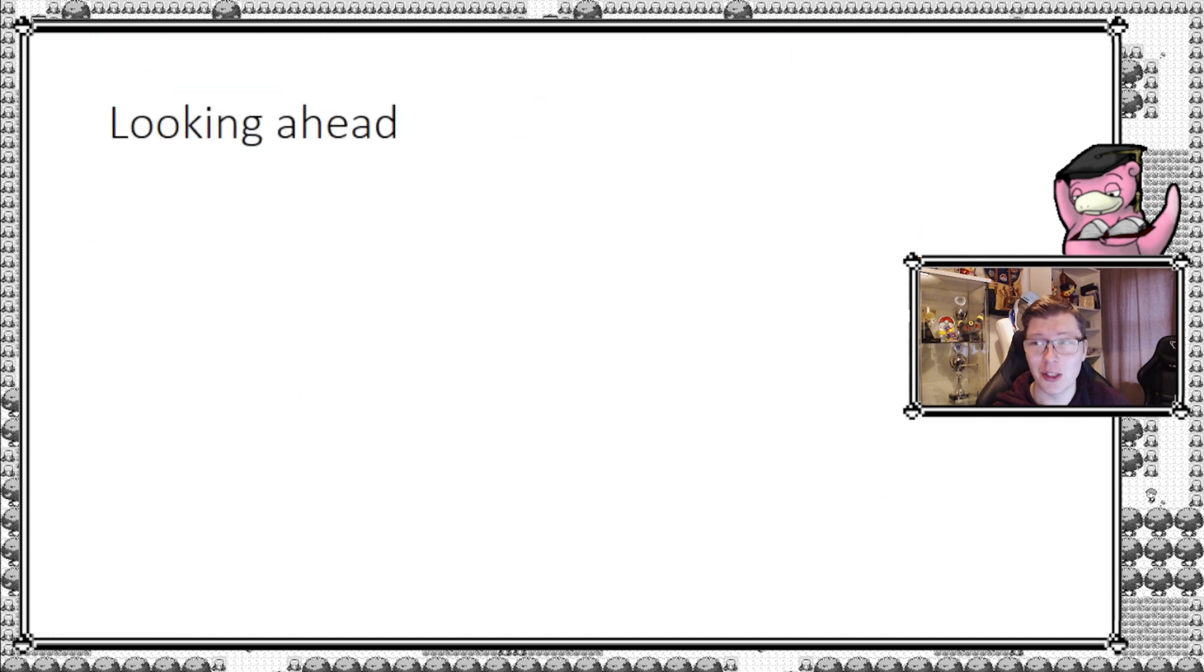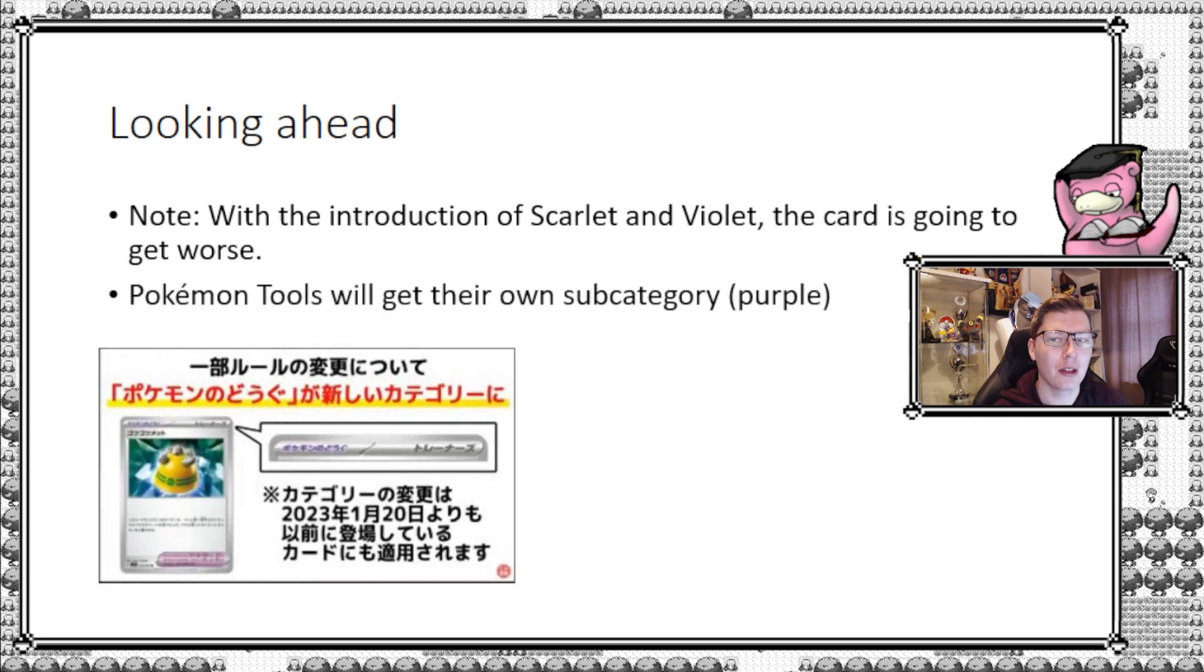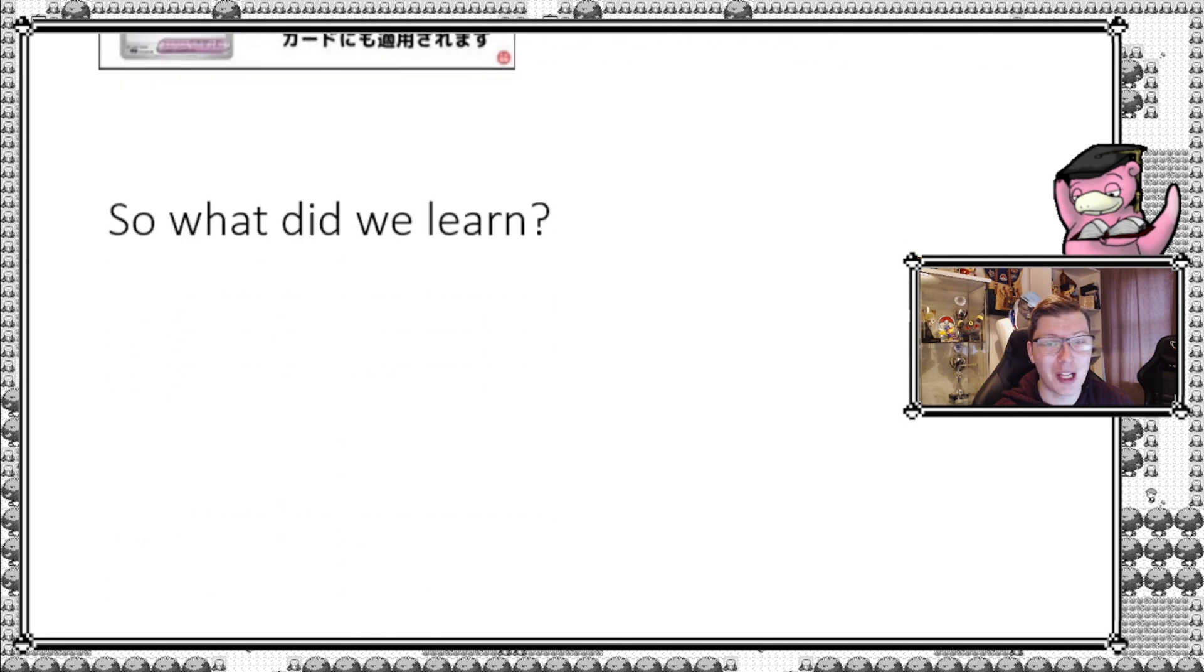With the introduction of Scarlet Violet, I will argue that this card is going to get worse up front. There's one thing that makes it worse, and that's because Pokemon tools will now get their own subcategory. Why is that important? It lowers the category of items. Previously you could hit a Choice Belt, Choice Band, parasol, any item, any tools. The point is you can no longer hit those because tools that are currently items will become tools, they'll be errata'd into tools, so they're no longer a target for Misfortune Sisters, arguably making the card worse.